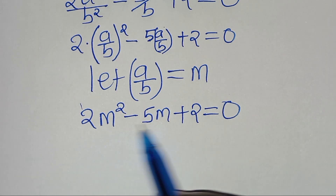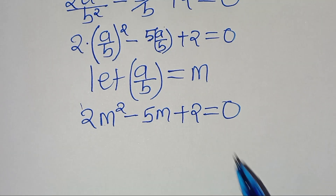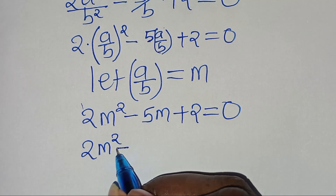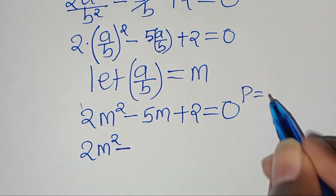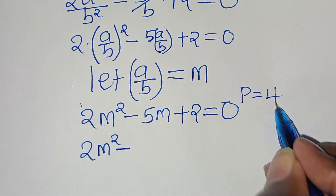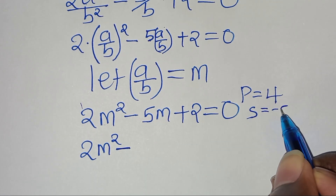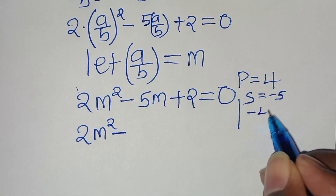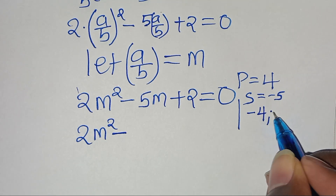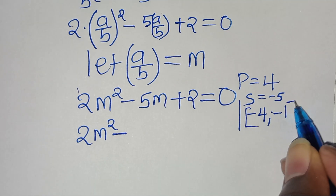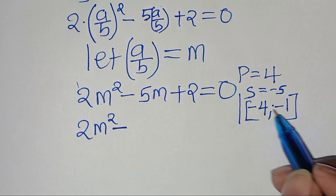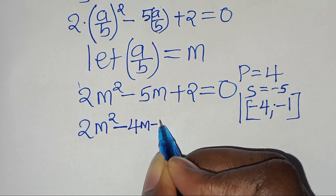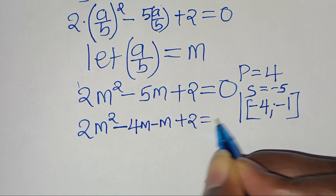We can solve this quadratic equation by factorization. The product here is 2 times 2, which is 4, and the sum is minus 5. So the two factors that sum to minus 5 and multiply to 4 are minus 4 and minus 1. So here we have 2m squared minus 4m minus m plus 2, equal to 0.